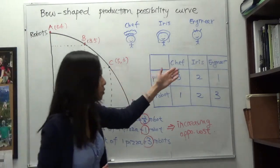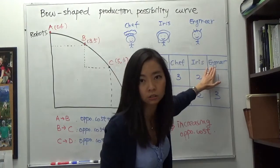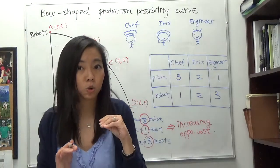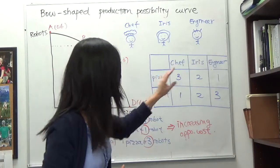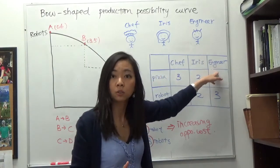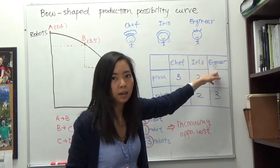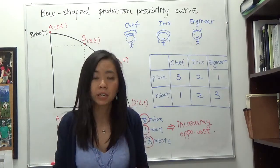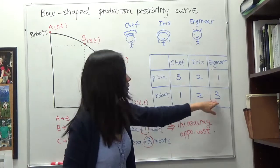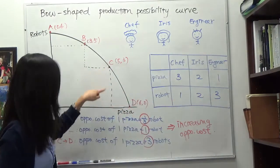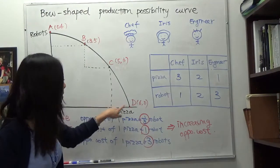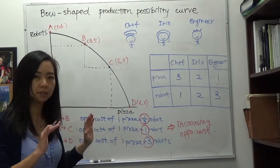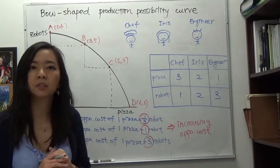Now suppose we still want more pizza. The only worker left to send is the engineer, and notice the engineer is a great robot maker. If we send him to make pizza, he has to sacrifice a lot of robots — three robots — and we only gain one pizza. So we're losing three robots and gaining just one pizza.